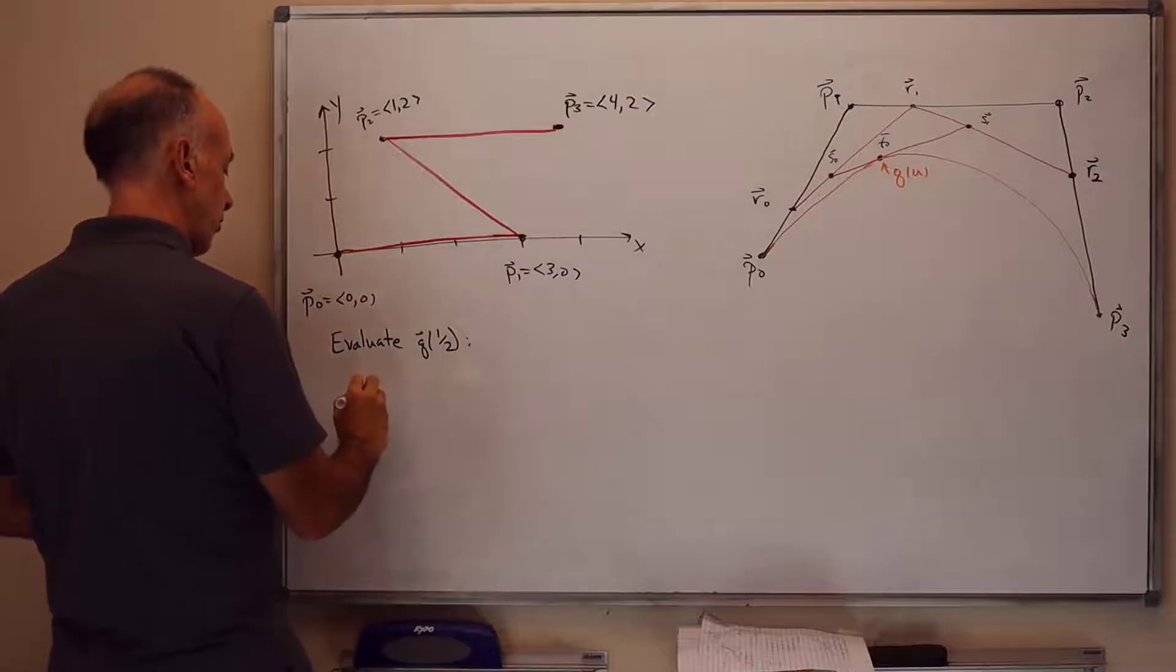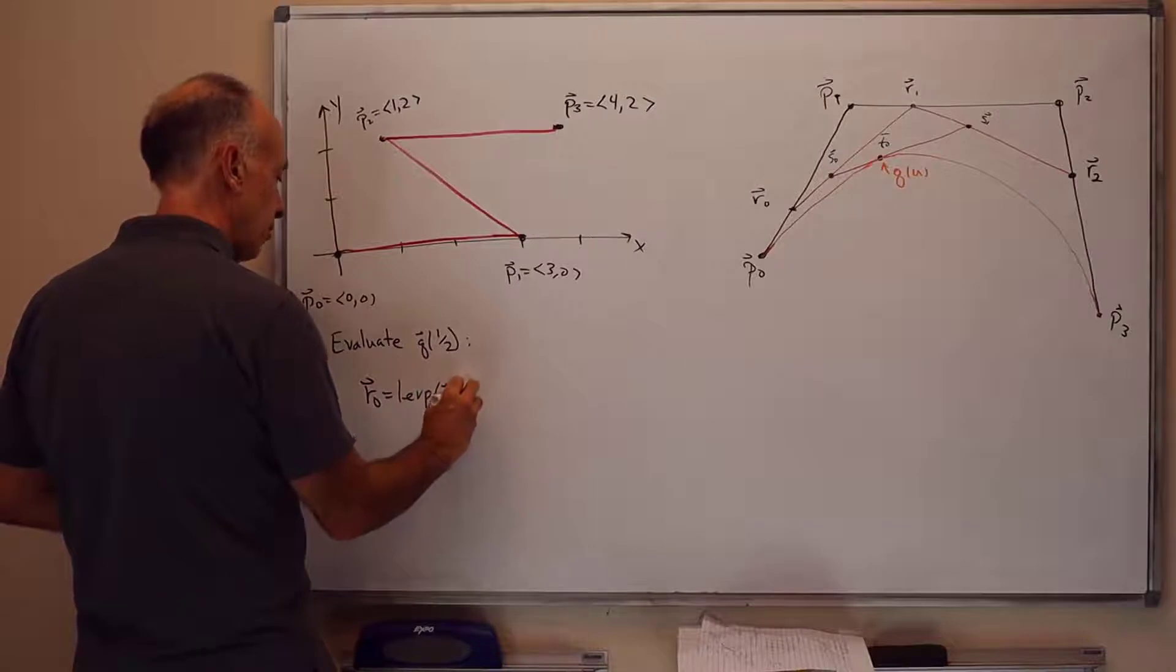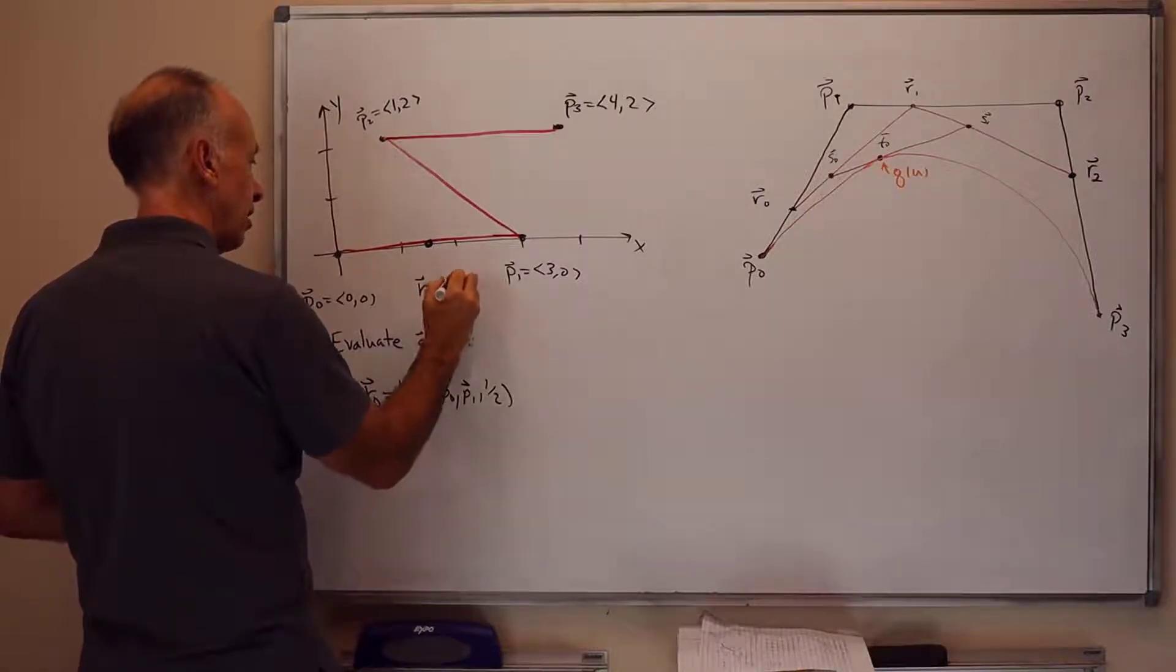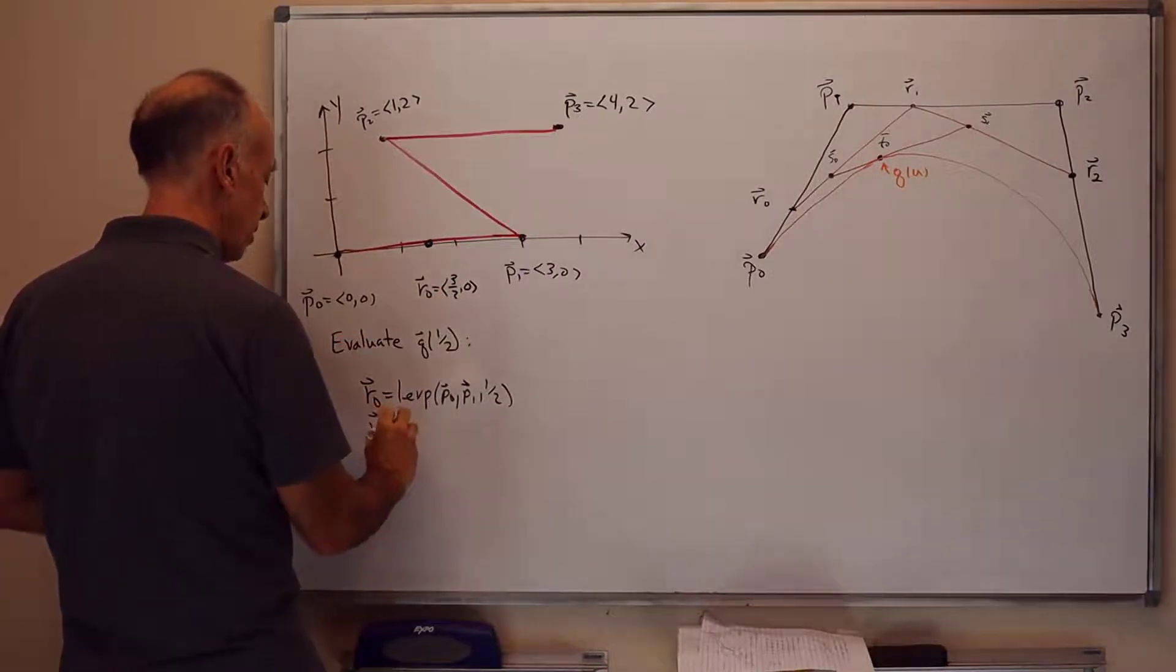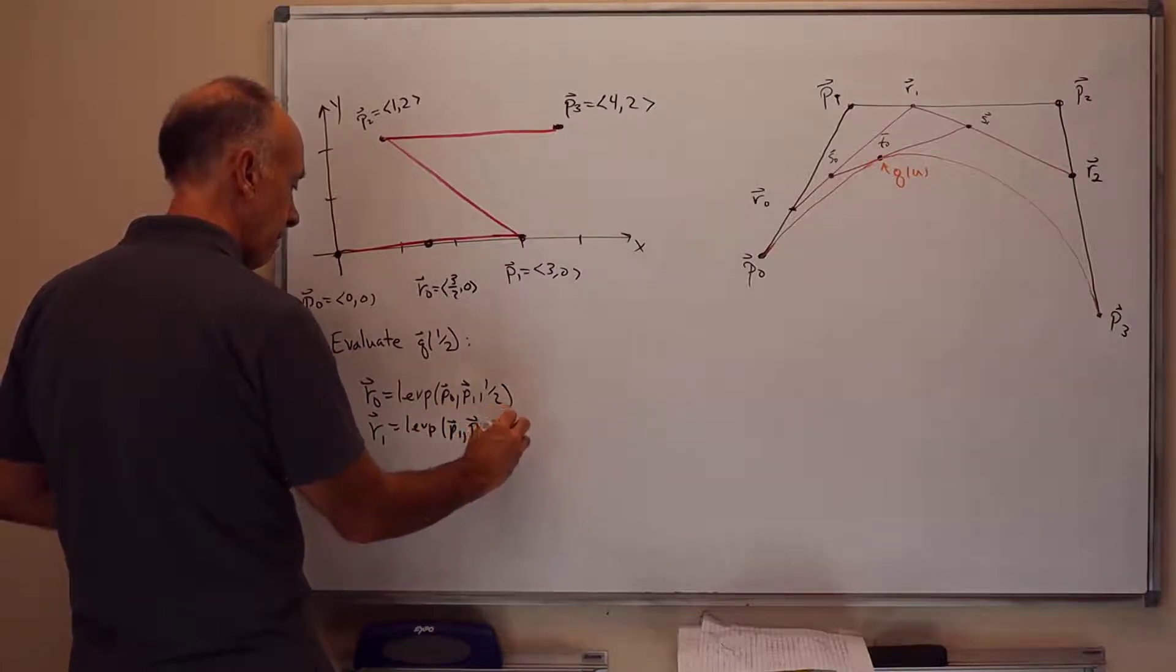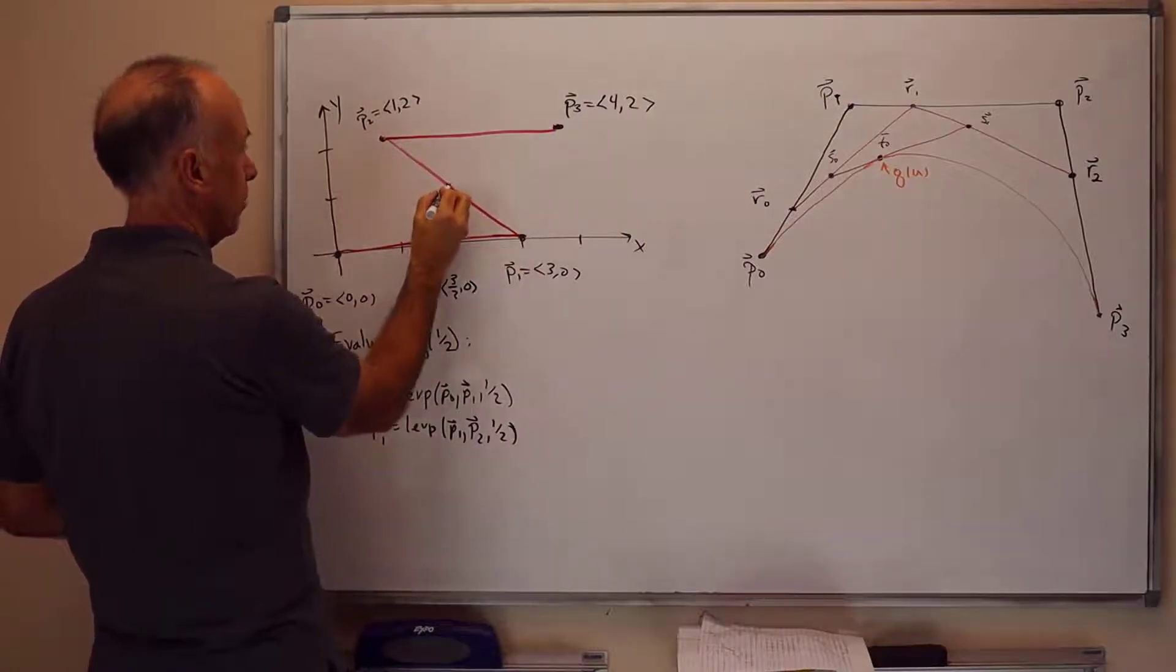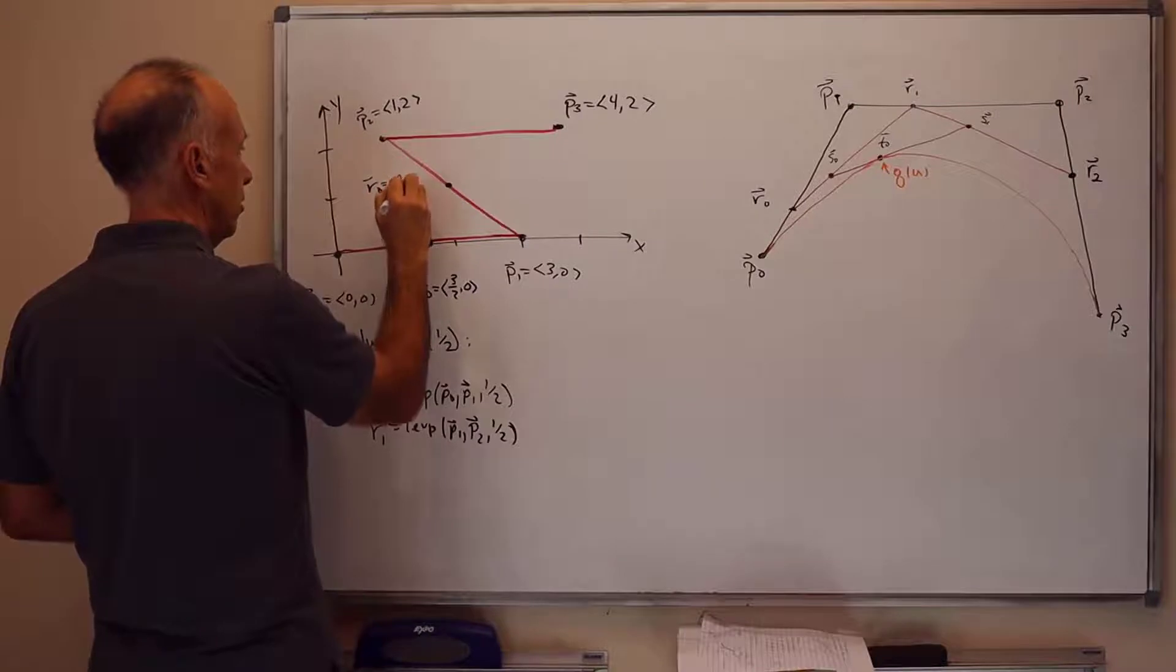So we're going to do the following. R0 will be lerp P0, P1, 1 half. So that's right here in the middle. R0 is in fact (3/2, 0). R1 will be lerp P1, P2, 1 half. So that's the midpoint of the line segment joining P1 and P2. So here's R1, and that is equal to (2, 1).